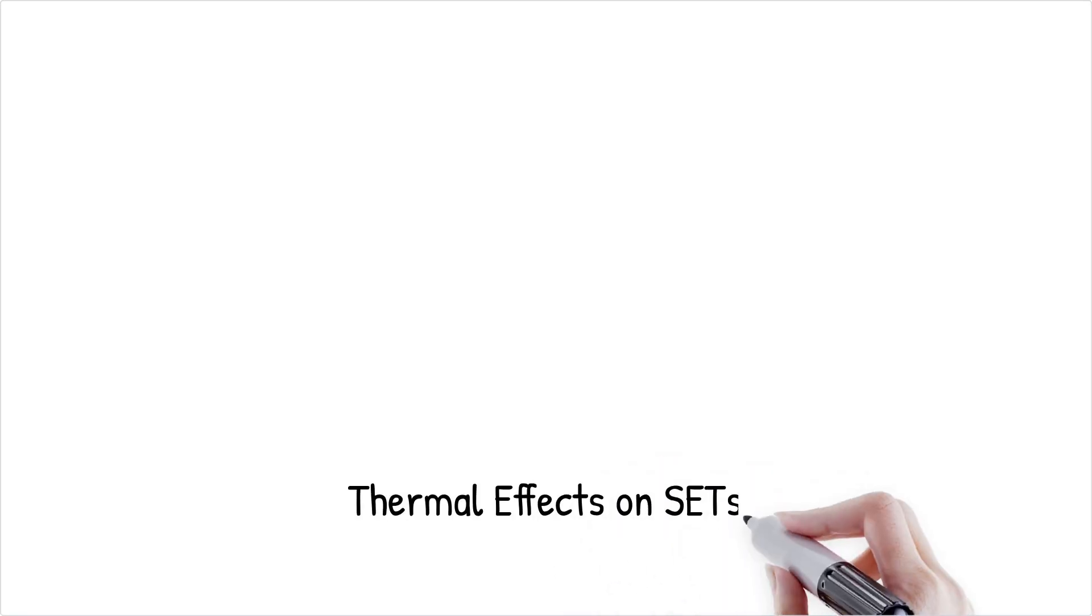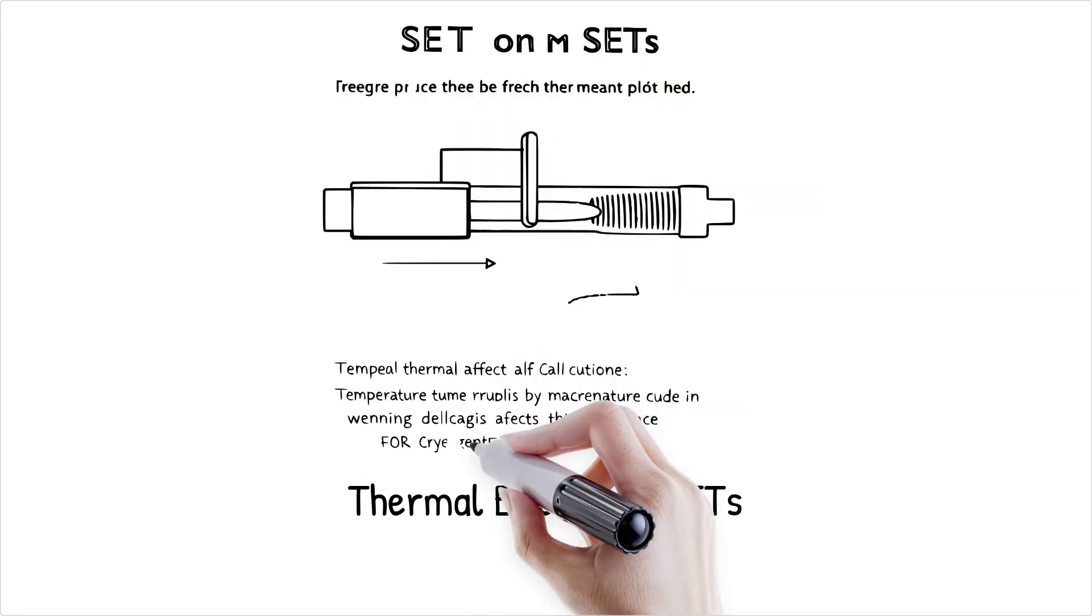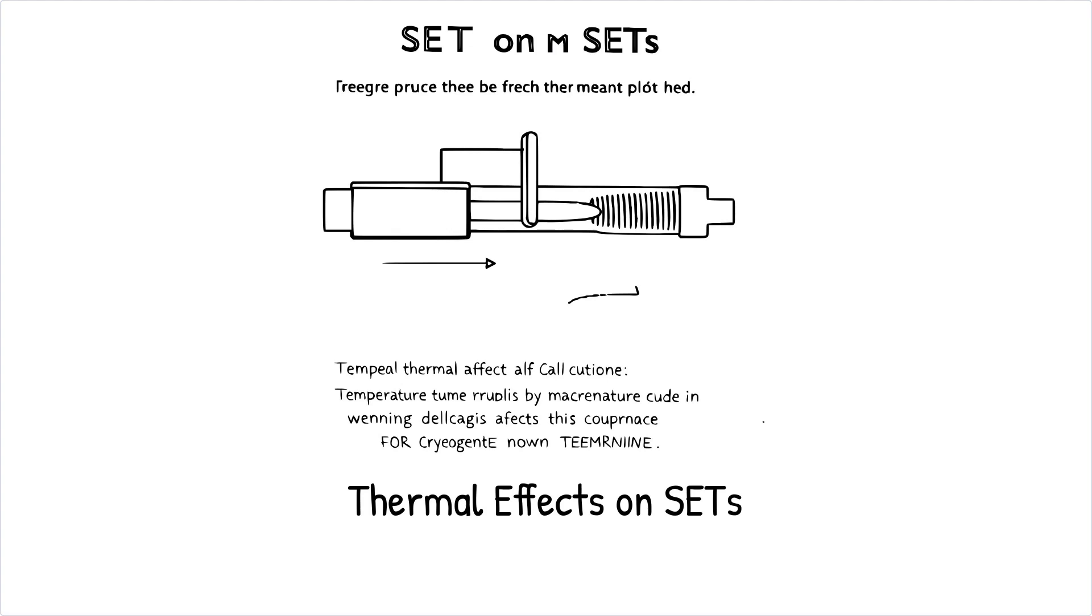SETs are highly sensitive to temperature changes. At room temperature, thermal energy can overcome Coulomb blockade, leading to errors. Consequently, most SETs operate at cryogenic temperatures to maintain their functionality and reliability.